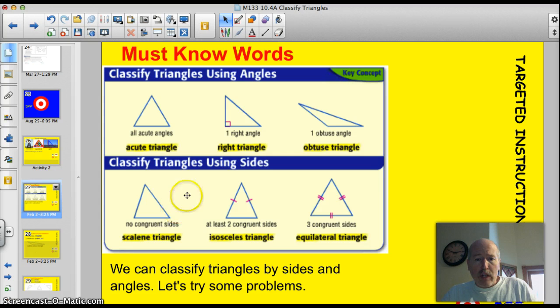We can also classify triangles by sides. This is a scalene triangle. No congruent sides, zero sides the same. Here's an isosceles triangle, kind of like the Eiffel Tower I showed you. It has two congruent sides, and they mark it with this little hash mark. And an equilateral triangle. They mark with two little hash marks showing that all three sides are congruent. Congruent means identical. So we can classify triangles by both sides and angles. Let's try some problems. I'm going to take you through 13 examples.